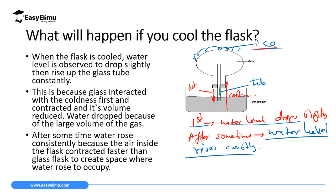Then after some time the cold from the ice reaches the air inside. Since gases contract more than solids, the air will contract more and occupy even less volume. When it occupies less volume it leaves empty space, and water from the beaker will rise to occupy the space created by the contracting air inside the round-bottomed flask.